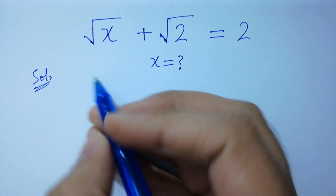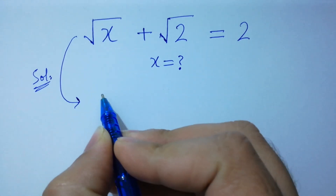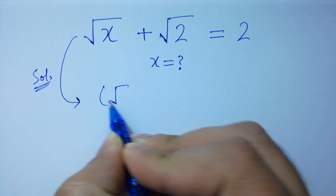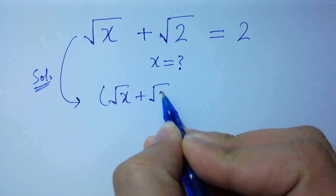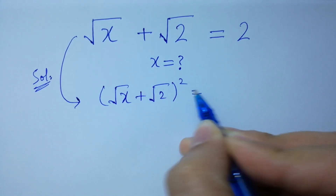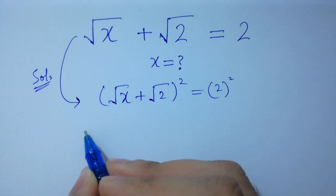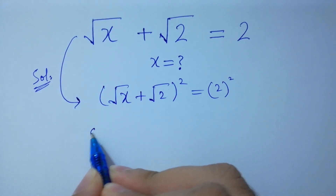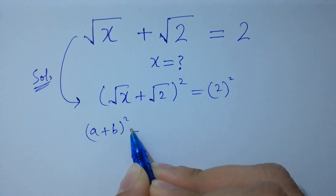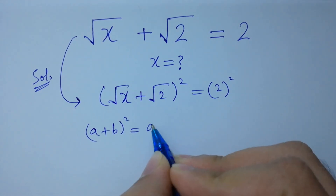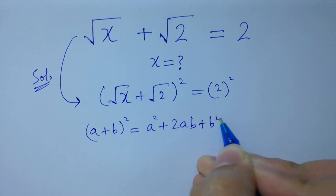To solve this, take square on both sides. As we know, the formula: a plus b whole square equals a squared plus 2ab plus b squared.